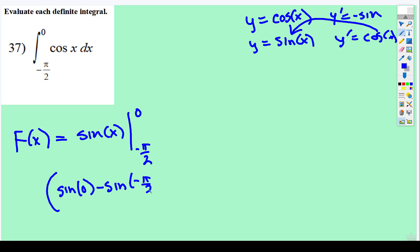So that's going to be sin(0) subtract sin(-π/2). Looking at the unit circle will be helpful. Sin(0) is... oh I'm sorry, sin(0) is 0.